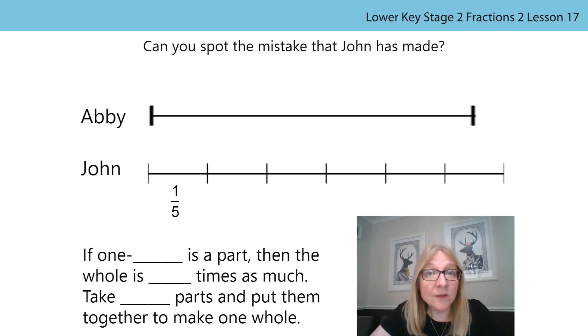Welcome back. Did you find the mistake? John had added an extra five equal parts to his line rather than having five parts in total. To correct this he needed to remove one part. In actual fact John did not run quite as far as Abby.